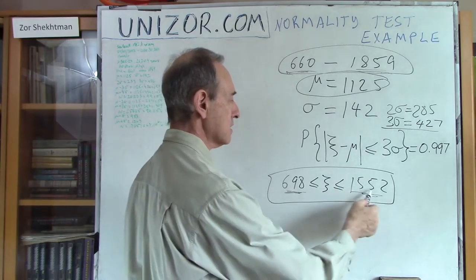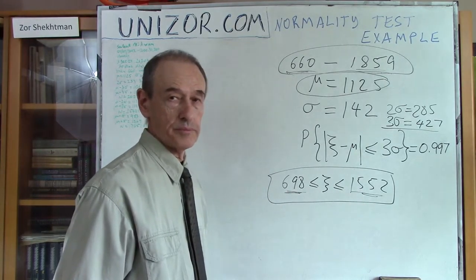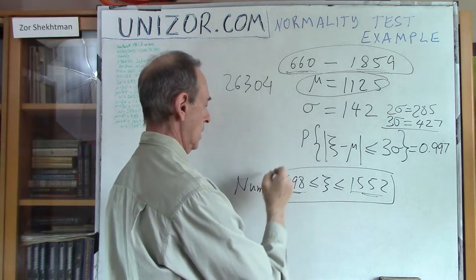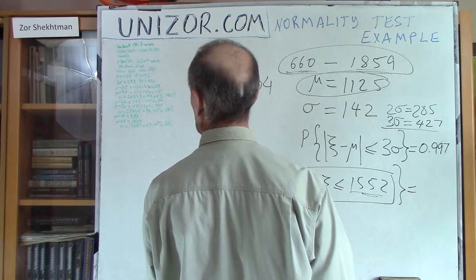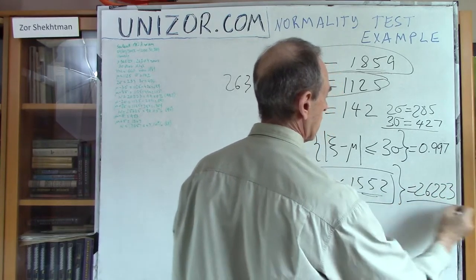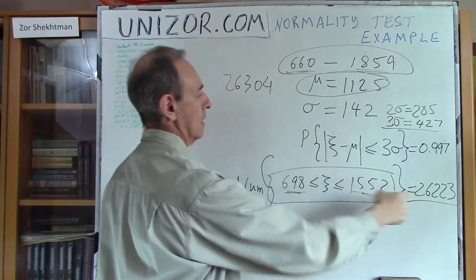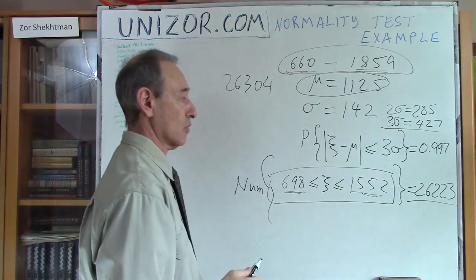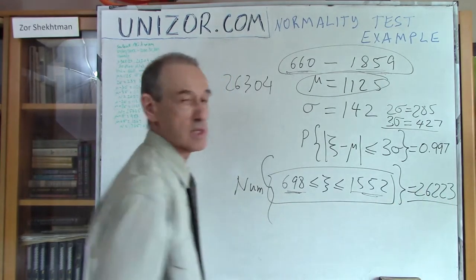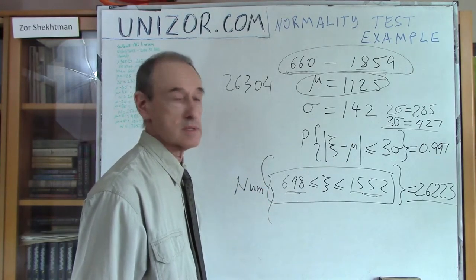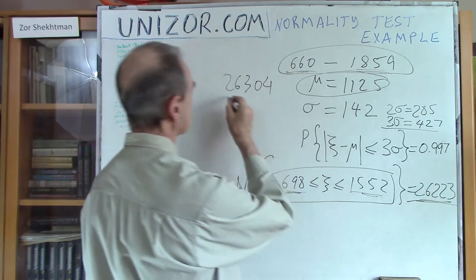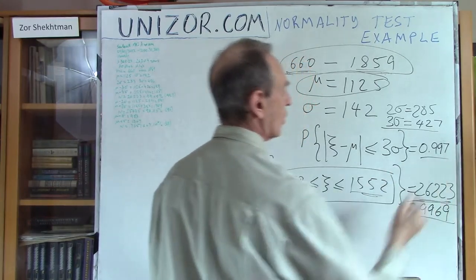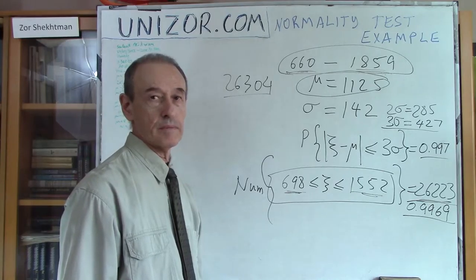I have calculated what is the frequency of my data, my 26,304. The number within this interval was 26,223. Almost everything went within this interval. There were cases above this and below this, but very few, like 80 of them or something like this. And this number relative to this is actually 0.9969. As you see, it's very close to theoretical value, how it's supposed to be. 3 sigma is fine.